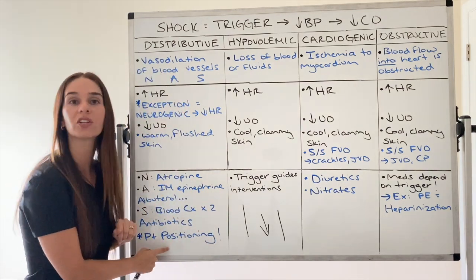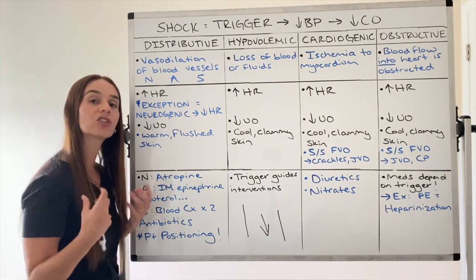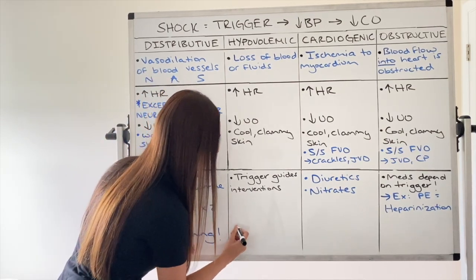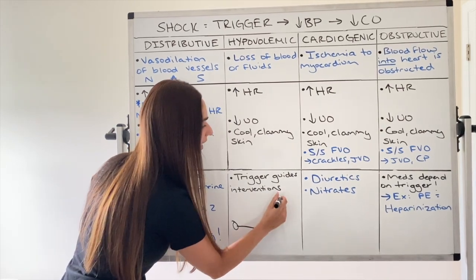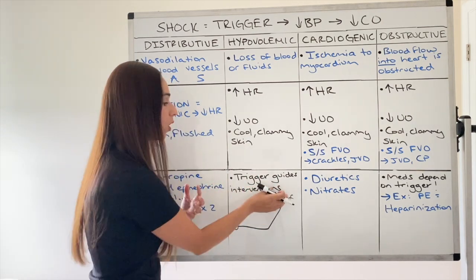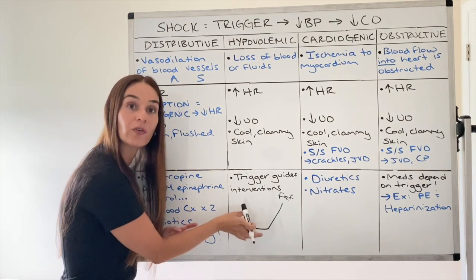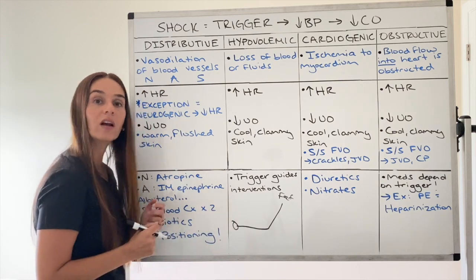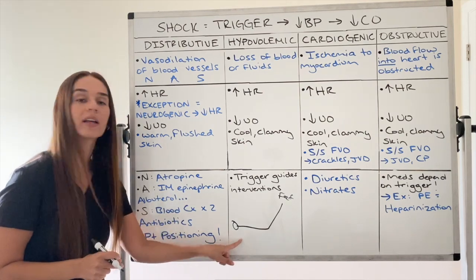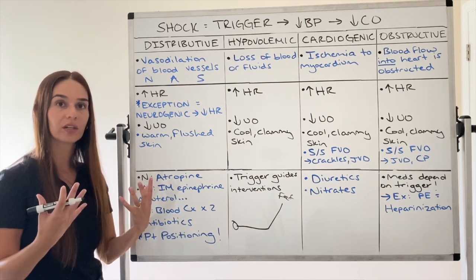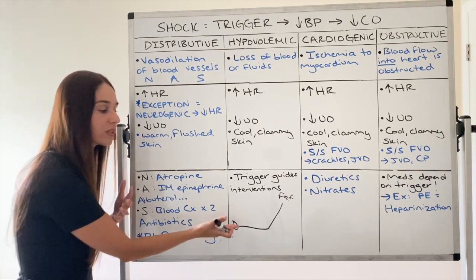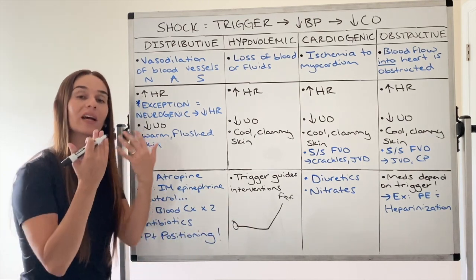Down here I put patient positioning. From my first video, shock position means the head is down and feet are up so that by gravity, fluid and oxygenated blood from the periphery returns to the trunk and vital organs — heart, lungs, brain. However, this is not universal for all shock. If a patient is in anaphylactic shock with a compromised airway, you would not lay them flat. You have to think about what is the best position based on the trigger. If their airway or breathing is compromised, you would most likely elevate the head of the bed instead.